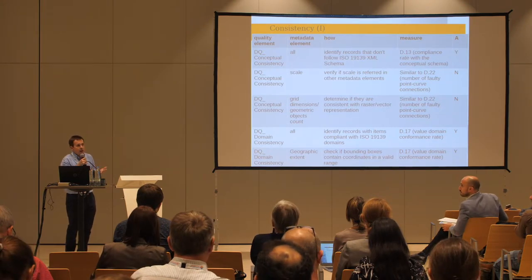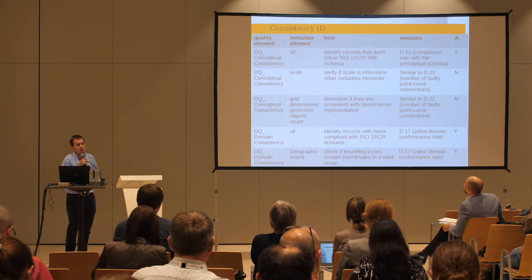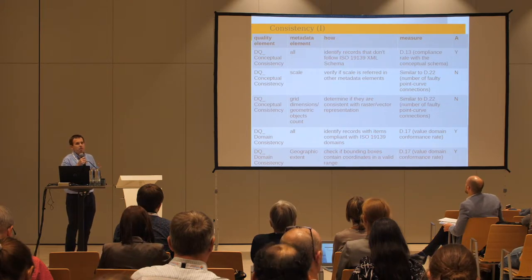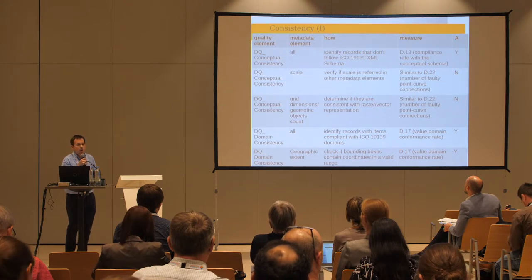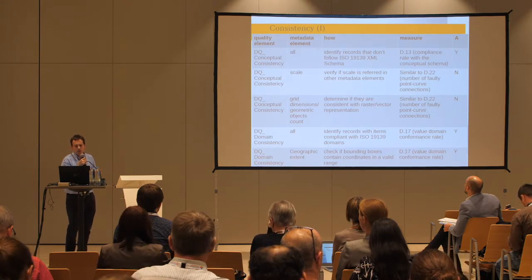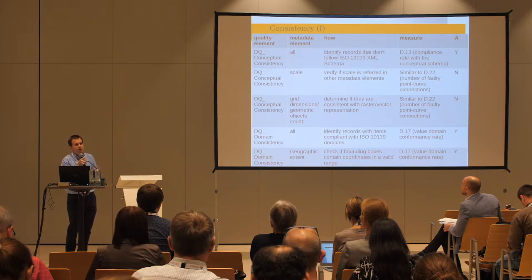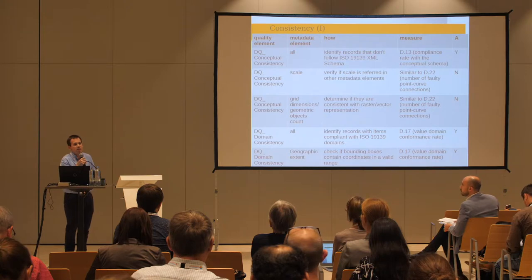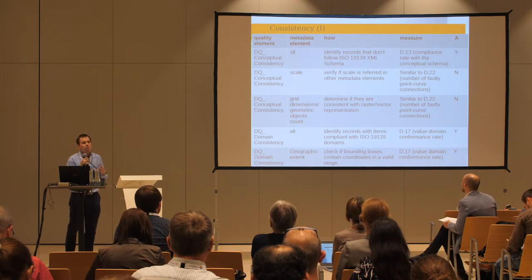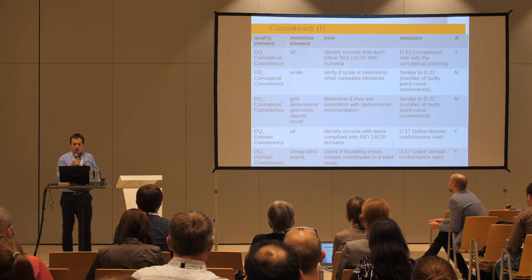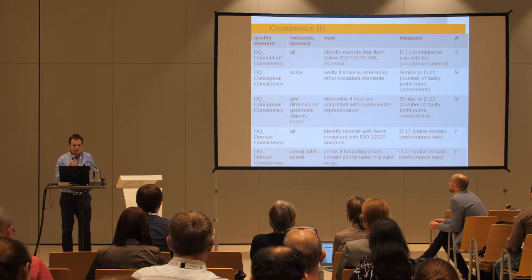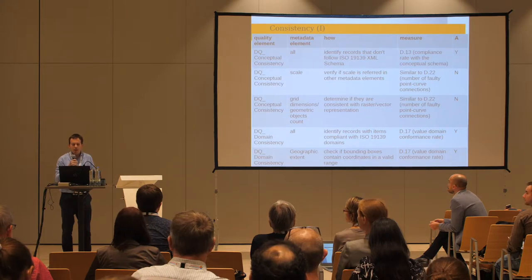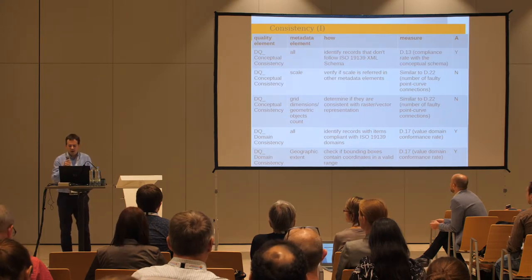We also check general domain consistency — whether metadata elements contain values allowed by ISO 19139. We also check specific domain consistency of some metadata elements. For example, we check if the coordinates of bounding boxes are in a valid range, confirming they are actual latitude and longitude values.